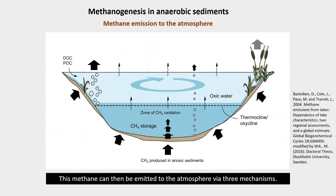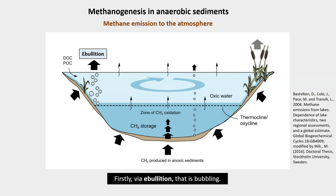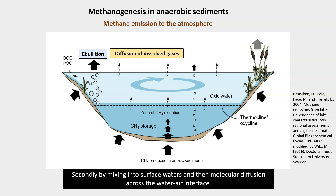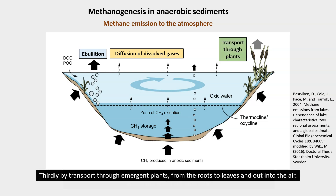This methane can then be emitted to the atmosphere via three mechanisms. Firstly, by ebullition — that is, bubbling. Secondly, by mixing into surface waters and then molecular diffusion across the water-air interface. And thirdly, by transport through emergent plants from the roots to leaves and out into the air.